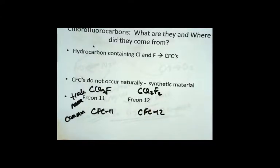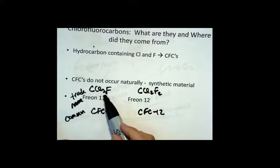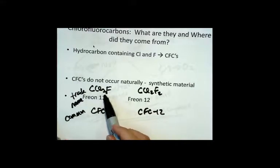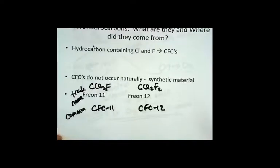If you do the Lewis structure, the carbon is the central atom, and these halogens, chlorine and fluorine, are in the group on the periodic table that we call halogens. The halogens are all terminal to the carbon.